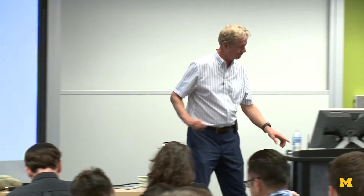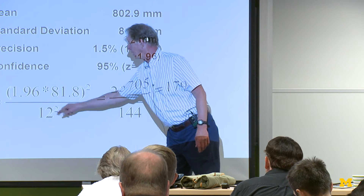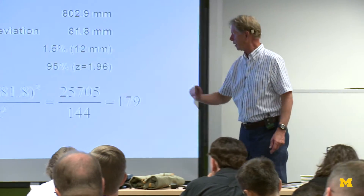Let's work through an example. For waist circumference — this is a military sample, but it doesn't matter — our mean is 802 millimeters and our standard deviation is 81. We've decided that the precision we need is one and a half percent of the mean, which in this case is 12 millimeters. And we've decided that we want to be 95% confident that we have the right answer, so we look up on a Z score table and that is 1.96. We throw those numbers in — that's the Z, that's the S, and that's the C — do the math and we get 179 people.